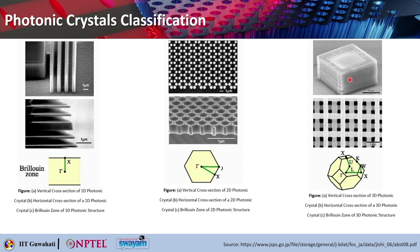Here is the vertical cross section of a 3D photonic crystal and this is the corresponding horizontal cross section. This is the Brillouin zone of this 3D photonic crystal, with important points marked that tell you about the irreducible Brillouin zone. We will get to know the concept of Brillouin zone in more detail in this lecture and see how these are calculated.